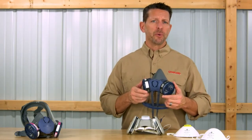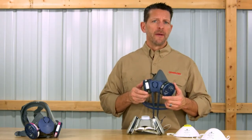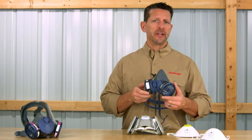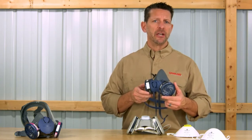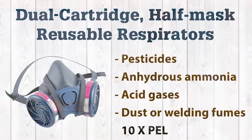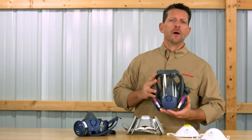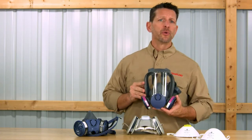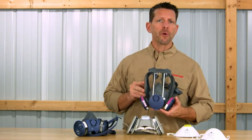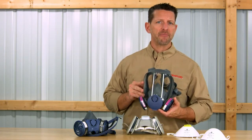Dual cartridge half mask reusable respirators — the main advantage of these is that the cartridges and filters can be changed to match different contaminants. These respirators are commonly used for protection against pesticides, anhydrous ammonia, acid gases, dust, or welding fumes. These also have a 10x PL.